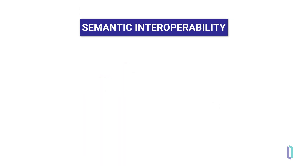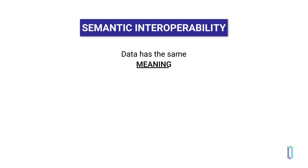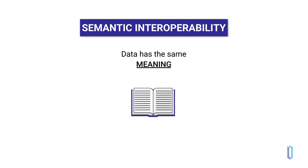Achieving semantic interoperability can help avoid some of these discrepancies. With true semantic interoperability, data from systems has the same meaning and can be used in the workflow of the receiving system. Data elements are consistently defined and human interpretation is not required.